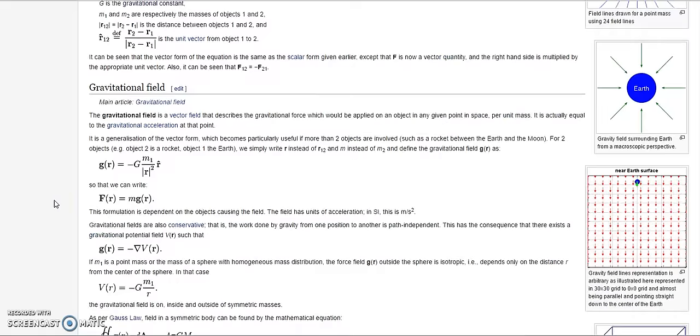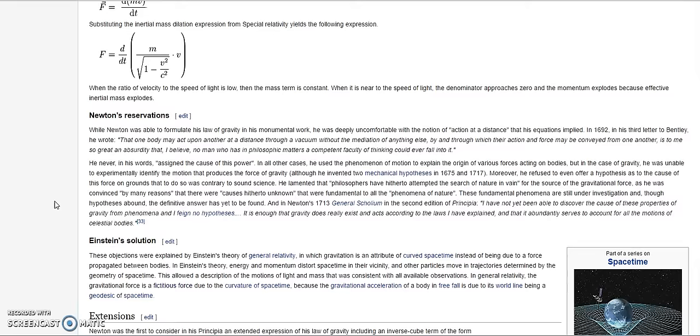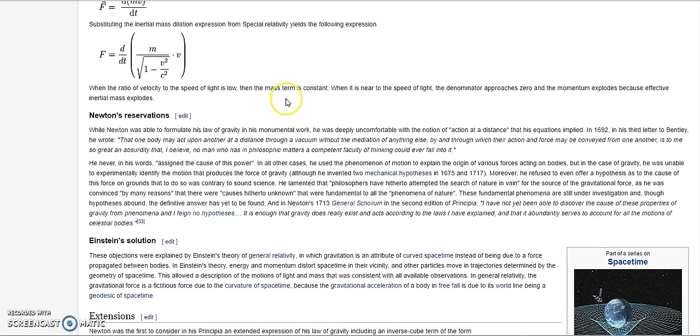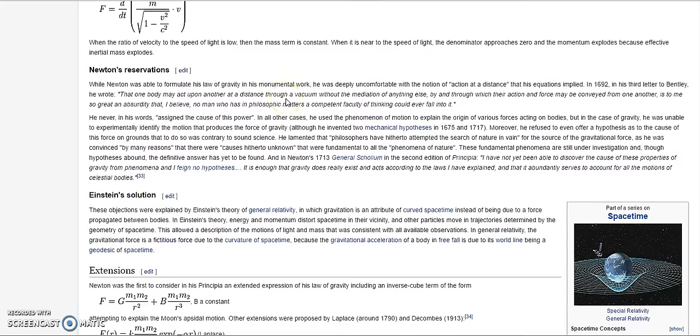And there is an admission from Newton that this is basically the case. Where here he says in his third letter to Bentley, he wrote that one body may act upon another at a distance through a vacuum without the mediation of anything else, by and through which their action and force may be conveyed from one another, is to me so great in absurdity that I believe no man who has in philosophic matters a competent faculty of thinking could ever fall into it. So he just slammed his own theory saying that these bodies through this vacuum of so-called space cannot act upon each other without postulating something absurd. So he was very aware of the flimsiness of this theory, which is so-called accepted as law.